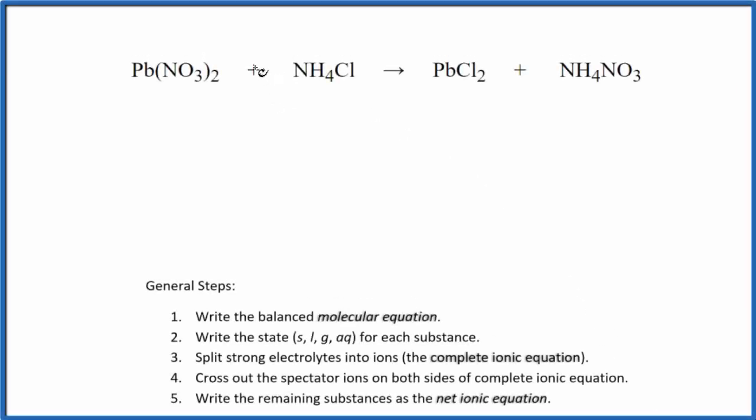In this video, we'll write the net ionic equation for Pb(NO3)2 plus NH4Cl. That's lead two nitrate plus ammonium chloride.